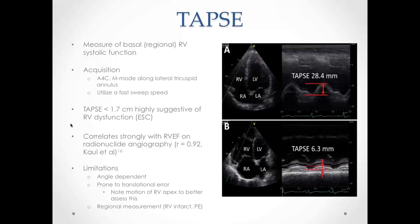Another limitation of TAPSE is that it is only a basal regional measurement, so in conditions with regional variability — such as RV infarct or pulmonary embolism — it may not reliably reflect overall RV systolic function. S prime, obtained by pulsed-wave tissue Doppler at the lateral tricuspid annulus, measures similar function; an S prime of 7 to 10 centimeters per second or less suggests RV dysfunction, but has the same regional limitations as TAPSE.